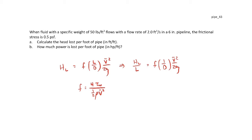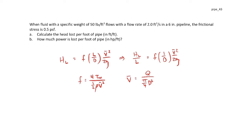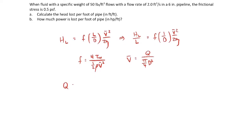Since we're given the volumetric flow rate, we write the average velocity as the volumetric flow rate divided by the cross-sectional area of the pipe. The volumetric flow rate is 2 cubic feet per second, the diameter is 6 inches (one-half foot), and from that the average velocity in the pipe comes out to be 10.19 feet per second.